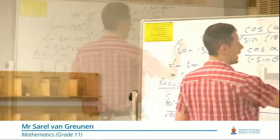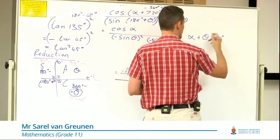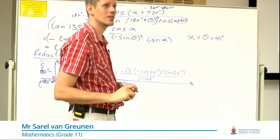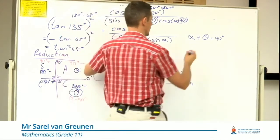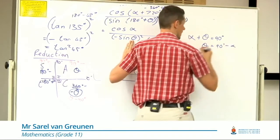But I know that alpha plus theta is 90 degrees, so I'm looking at co-functions. So I can go and change my theta to an alpha by going theta is 90 degrees minus alpha.